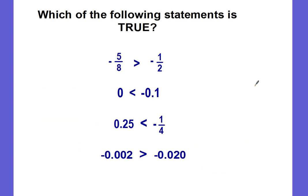Last one: which of the following statements is true? The less than symbol has the squished L; the other two would be greater than. Starting with the first: is zero less than negative one-tenth? Zero is to the right of negative one-tenth on the number line, so zero is greater than negative one-tenth. This statement is false.